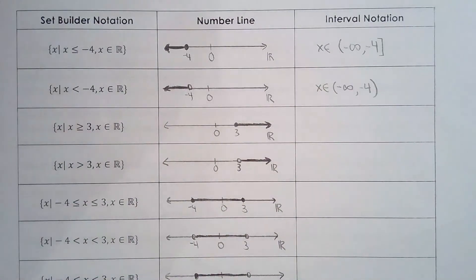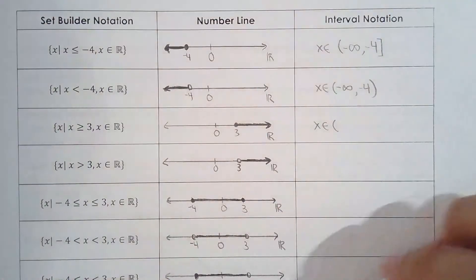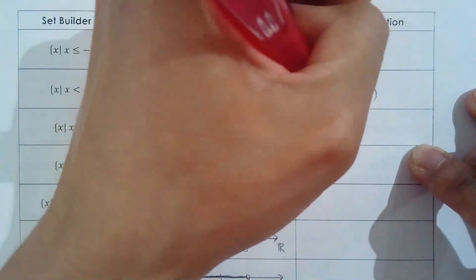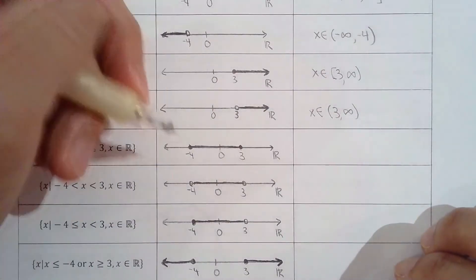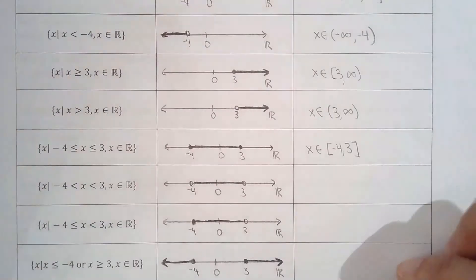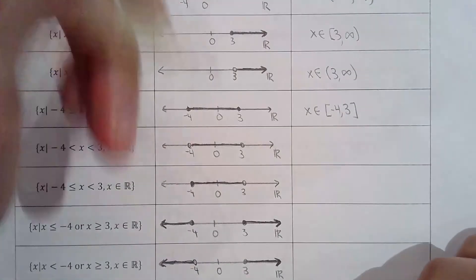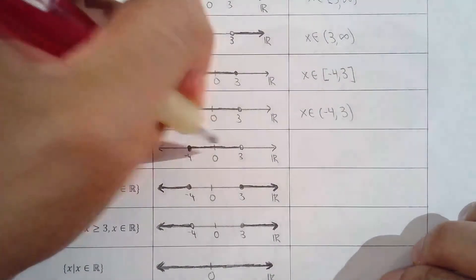x is greater than or equal to 3: square bracket because we want to include the endpoint 3. If it's just greater than 3, round bracket. Negative 4 to 3 including both: square brackets on both sides. If you don't include either, round brackets — that's an open interval. And the semi-open: include negative 4 but don't include 3.